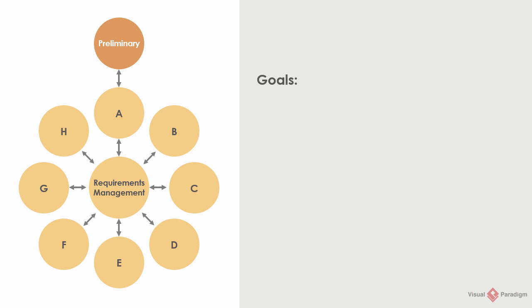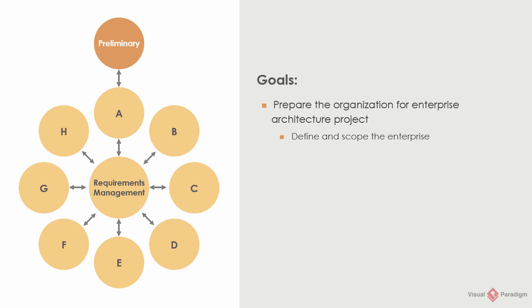Here are the goals of the Preliminary Phase. We perform preparation and initialization activities to meet the business directive for a new enterprise architecture. Here are some of the activities. Define and scope the enterprise — you need to know which parts of an organization will be affected in the architecture to be developed and how much they will be affected. Define the architecture principles, which are the general rules and guidelines that govern the conduct of architecture work. Set up an architecture repository — throughout the ADM, you will keep producing different kinds of documents, which can be stored and organized in an architecture repository.